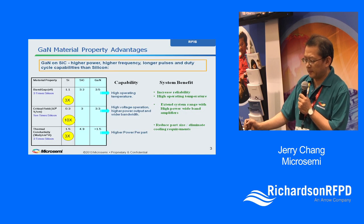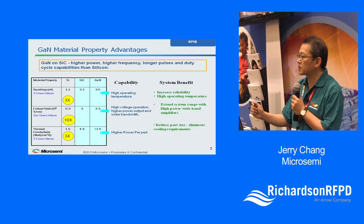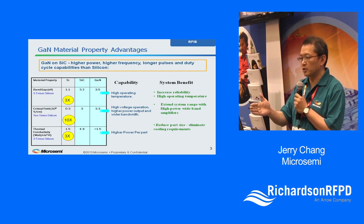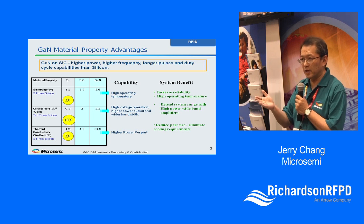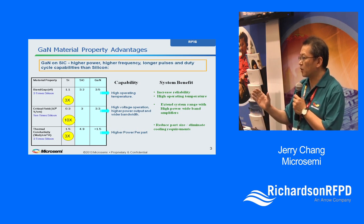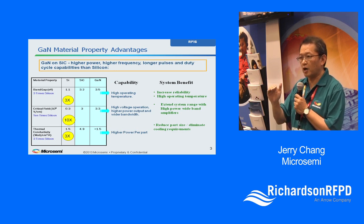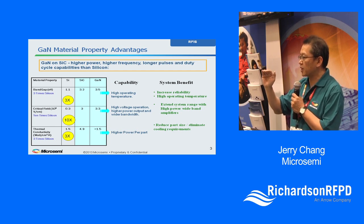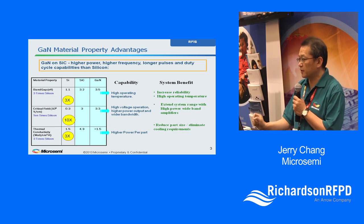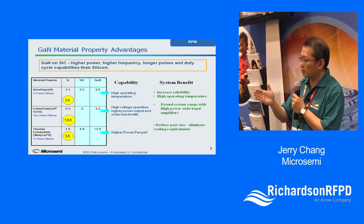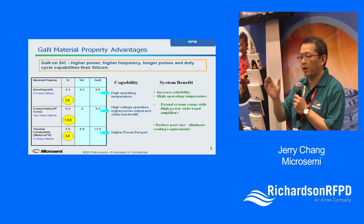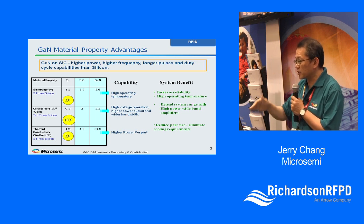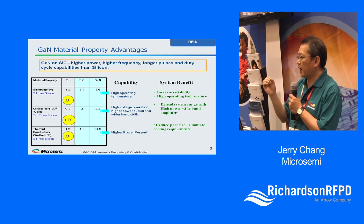Let's talk about GaN technology. The advantage of GaN on a silicon carbide substrate is that the physical properties allow us to build a power transistor with much higher power density. The breakdown voltage of these devices can go above 240 or 400 volts, allowing operation at higher voltages — for example, 50 or 65 volts. The band gap capability also provides excellent temperature stability and performance at elevated temperatures. Furthermore, thermal conductivity is three times that of traditional silicon-based LDMOS or bipolar, enabling rapid heat dissipation in small high-power packages.